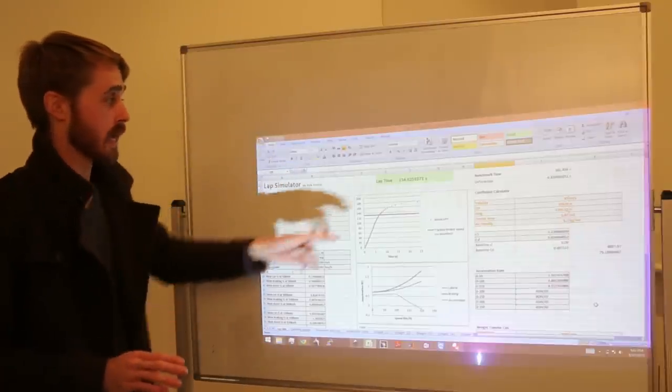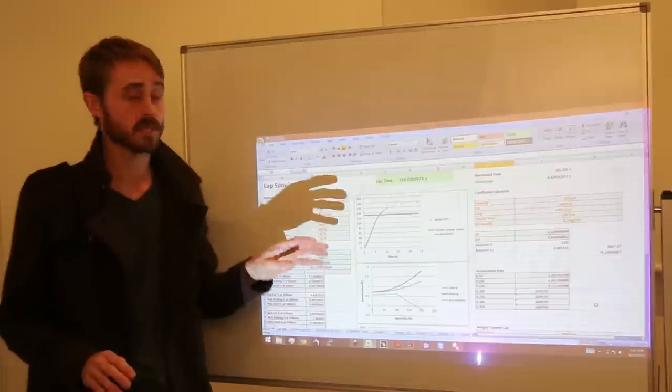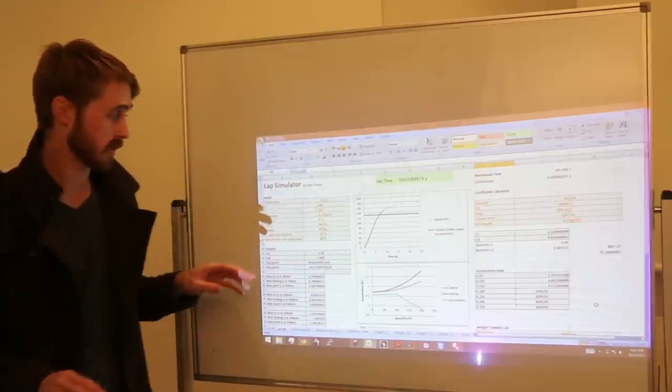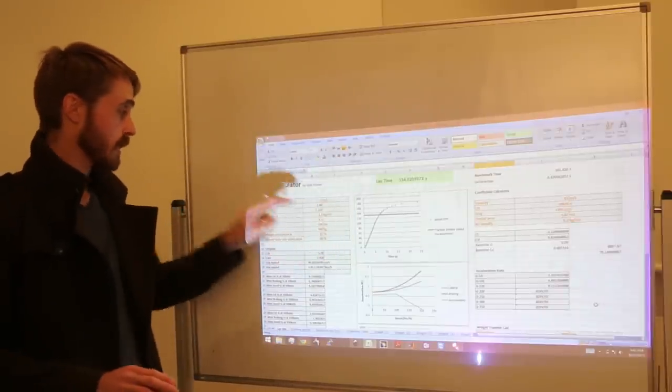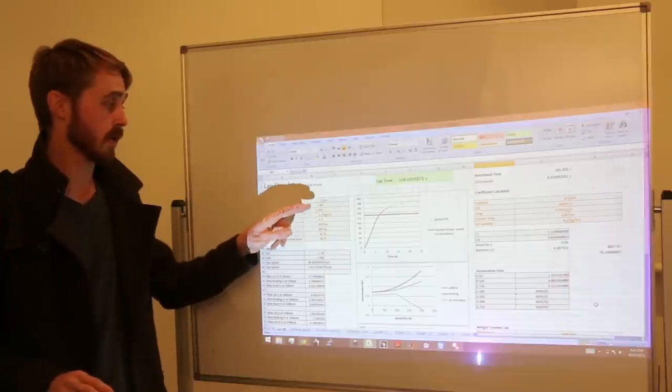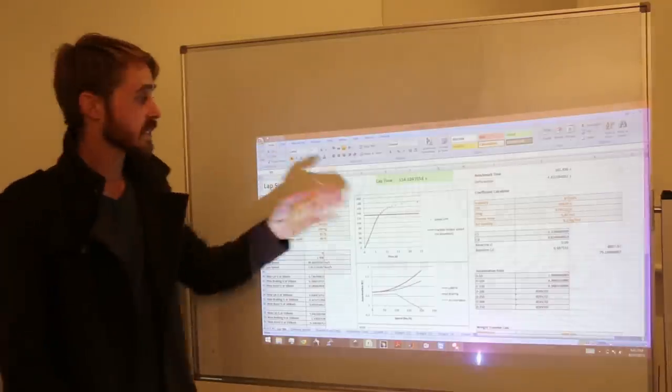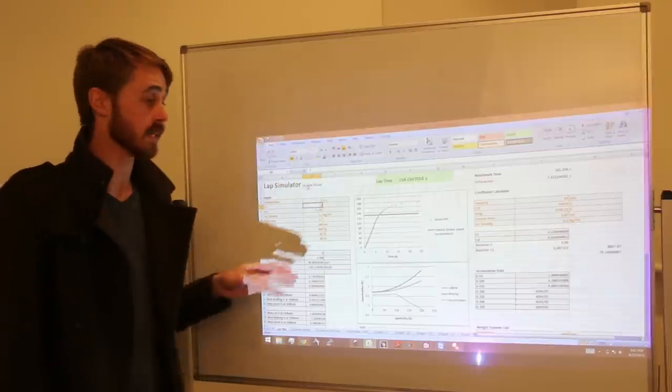Now just in terms of what this can mean for lap times, if we start off with a lap time of 154 seconds around the track that I've got in at the moment, and we increase the CL from negative 1.9 to 2, we can see our lap time has gone down by about 0.6 of a second.